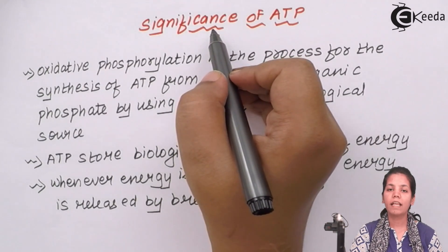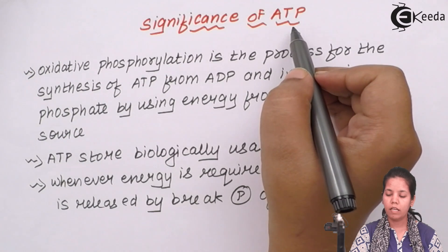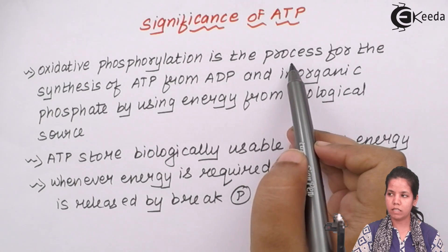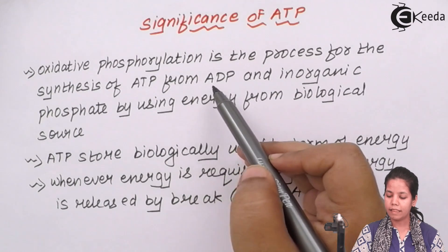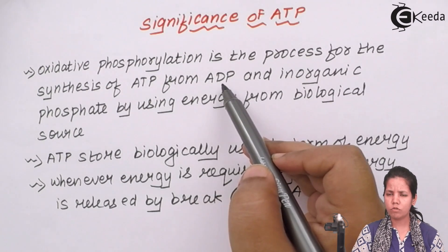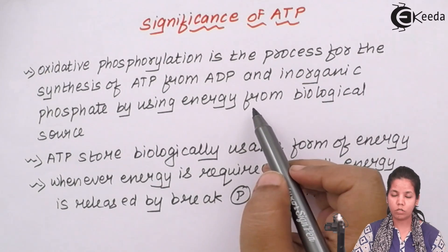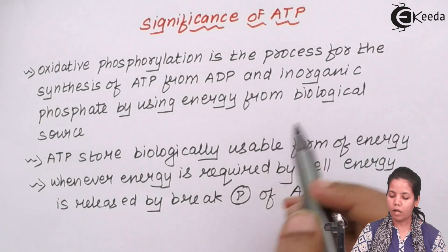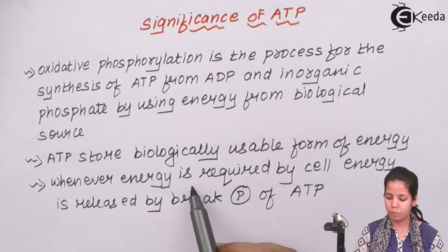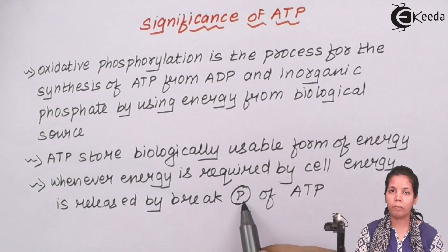The significance of ATP — or the importance of ATP. ATP means adenosine triphosphate. The process of oxidative phosphorylation is used for the synthesis and production of ATP. An inorganic phosphate molecule is added to ADP, that is adenosine diphosphate, which has two phosphates, to form ATP, adenosine triphosphate. ATP is a store of biologically usable form of energy. Whenever energy is required, the phosphate bond of ATP is broken down and energy is released.